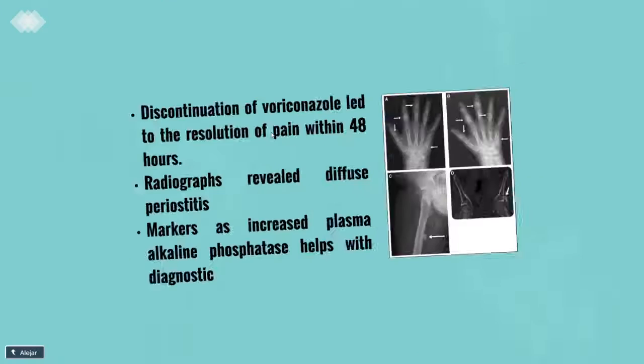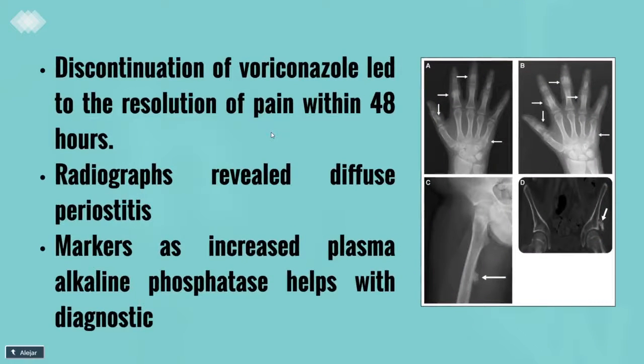Talking about the pros of this drug: when it produces periostitis, the discontinuation of this drug led to the resolution of pain within 48 hours. Radiographs revealed diffuse periostitis, so it is easy to diagnose this illness. Markers such as increased plasma alkaline phosphatase also help with diagnosis.